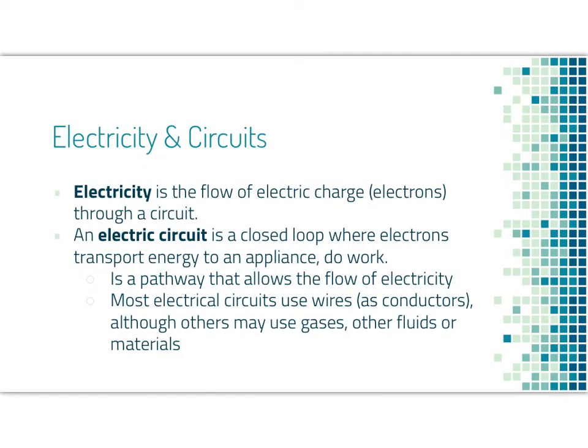Electricity is the flow of electric charge, or electrons, through a circuit. An electric circuit is a closed loop where electrons transport energy to an appliance and they do work. A circuit must be closed, so a complete circle, and electrons will move in one direction through a circuit. Typically we have something maybe like a light bulb to light up, and so these electrons are doing work to create light.